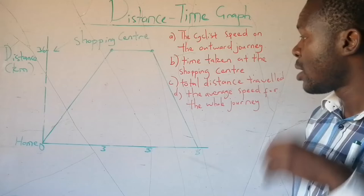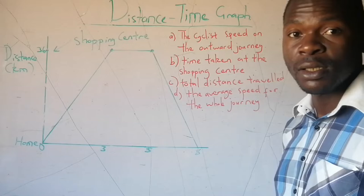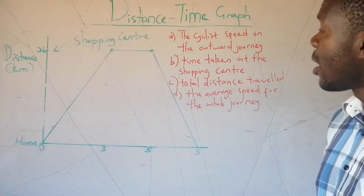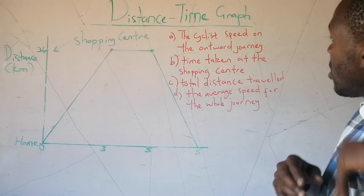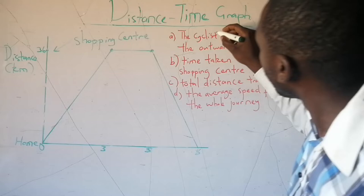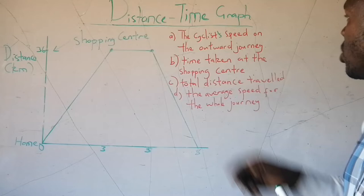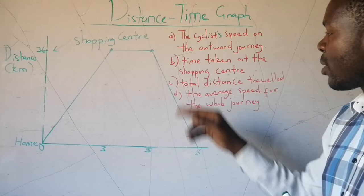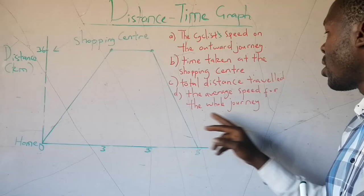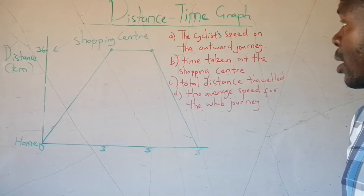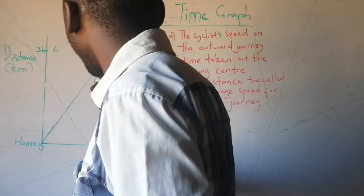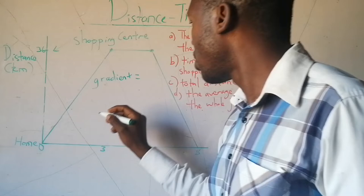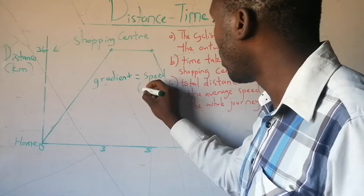Let us talk about distance-time graphs. Consider this example of a cyclist who goes shopping and returns home. We have these questions: calculate the cyclist's speed on the outward journey, the time taken at the shopping center, the total distance traveled, and the average speed for the whole journey. Just a reminder: in terms of a distance-time graph, the gradient or slope is equal to speed or velocity.